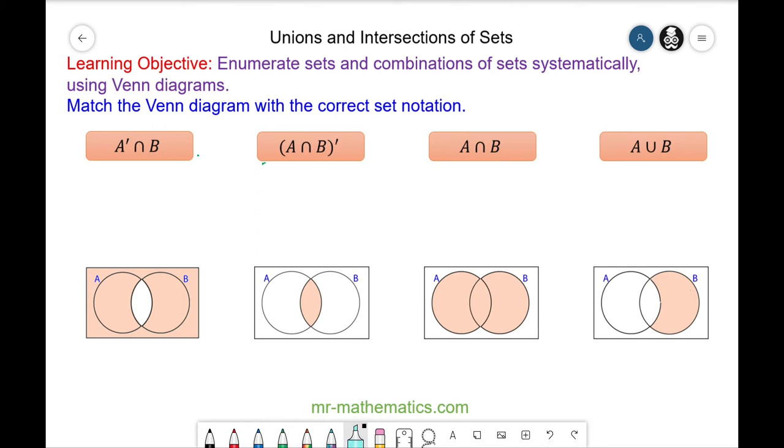Okay, so we'll begin with A intersecting with B, which we know is the region where the two sets overlap. So this one matches with this one.